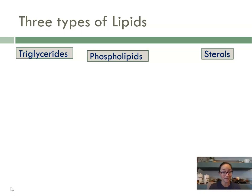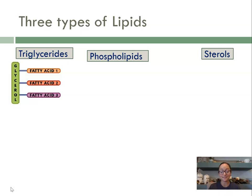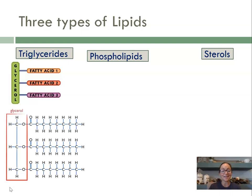Let's talk about the three different types or categories of lipids. The most abundant type of lipid on Earth is called a triglyceride. A triglyceride is made out of a glycerol and three fatty acids. Here is the molecular structure of a triglyceride.